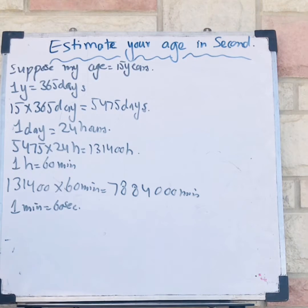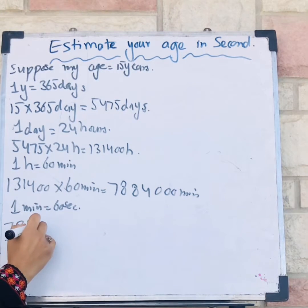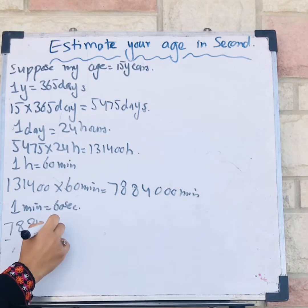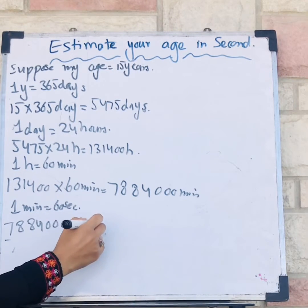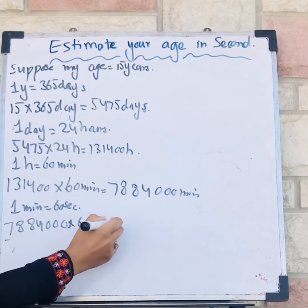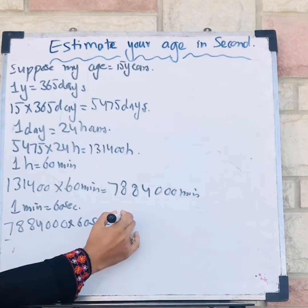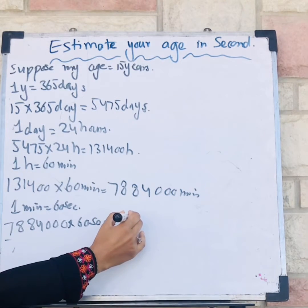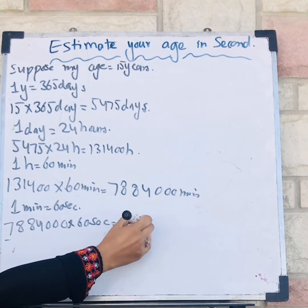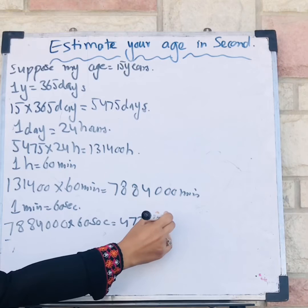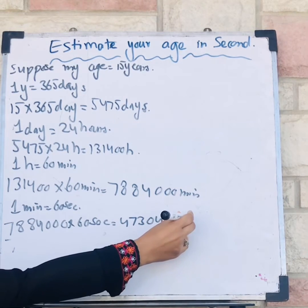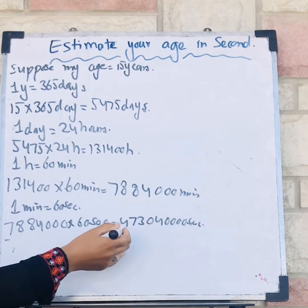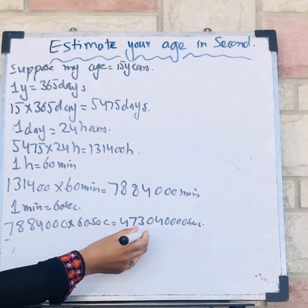So 7,884,000 × 60 seconds. When I multiply it I get 473,040,000 seconds. That is my estimated age in seconds.